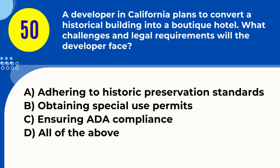Question 50. A developer in California plans to convert a historical building into a boutique hotel. What challenges and legal requirements will the developer face? A. Adhering to historic preservation standards B. Obtaining special use permits C. Ensuring ADA compliance D. All of the above. Answer: D. All of the above. Explanation: Converting a historic building requires adherence to preservation standards, obtaining special permits, and ensuring ADA compliance.